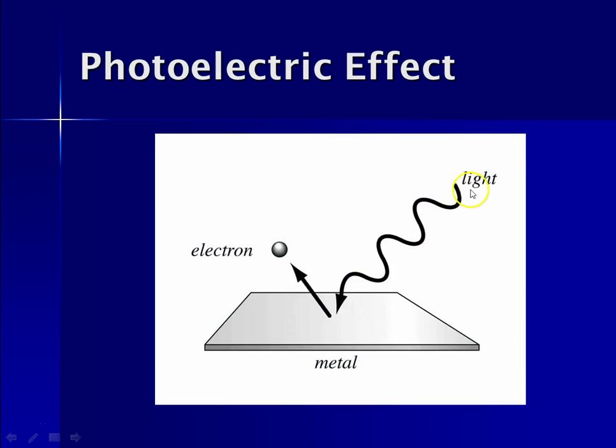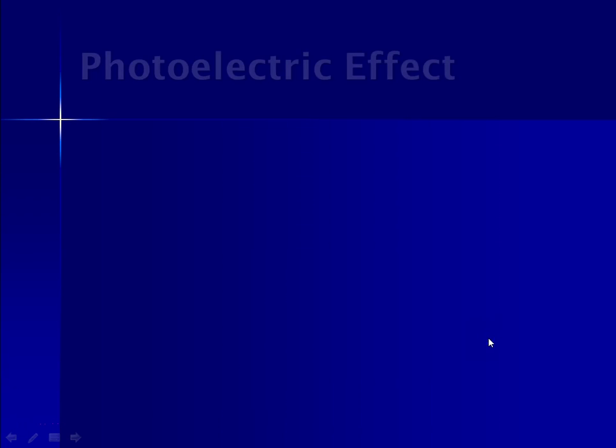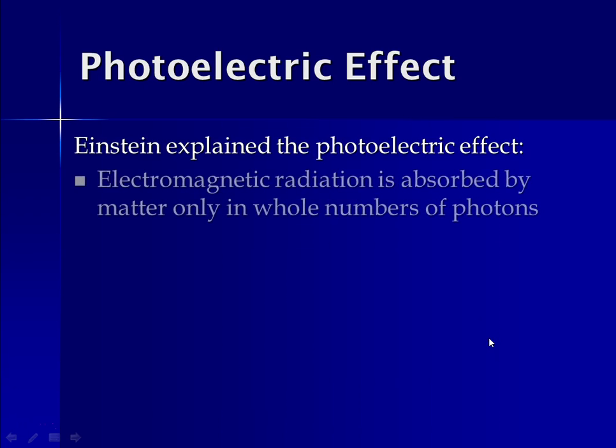So this photoelectric effect, again, incoming light comes in, hits a metal, and the metal can be any metal. It was observed with copper and zinc and all different kinds of metal. What happens is as you go through different frequencies of light, eventually you hit the right frequency of light. And all of a sudden, you'll start to see this sheet of metal spew electrons.